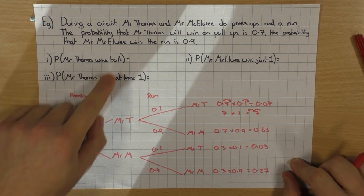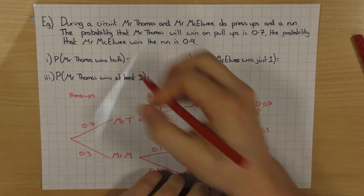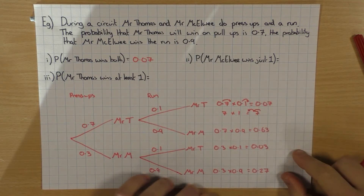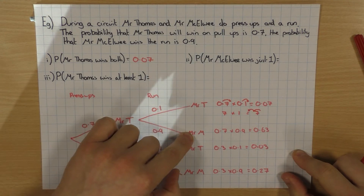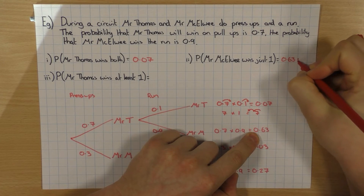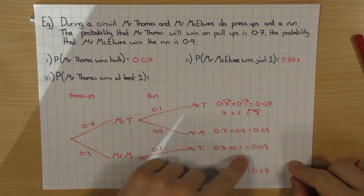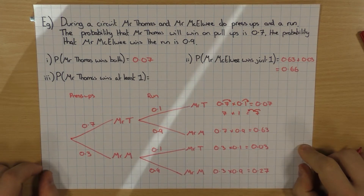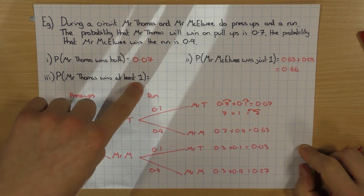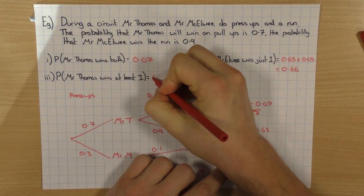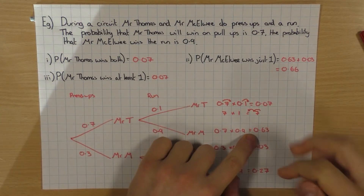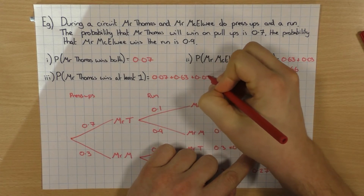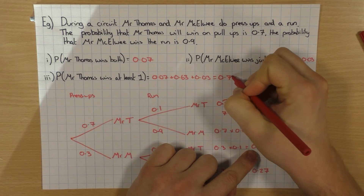What's the probability that Mr. Thomas wins both? That's Mr. T winning press-ups and Mr. T winning the run, so it'd be 0.07. Probability that Mr. McKelvey wins just one: Mr. Thomas wins first and Mr. McKelvey wins second gives 0.63, plus Mr. McKelvey wins first and loses the next gives 0.03, which is 0.66. And all the end outcomes will also add up to one — another check you can do.